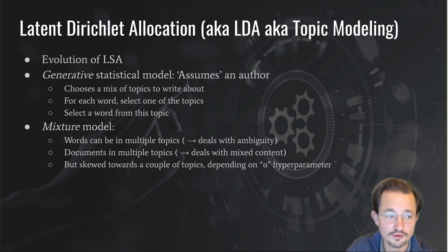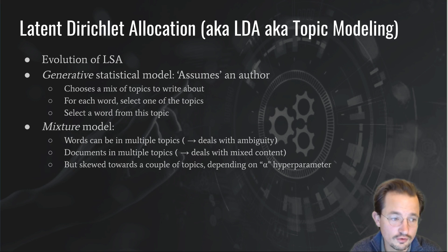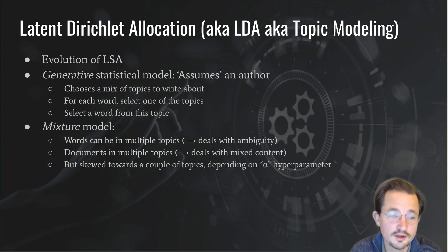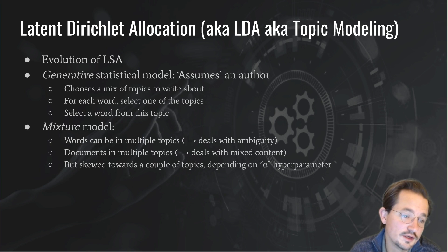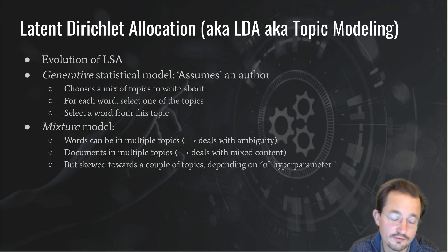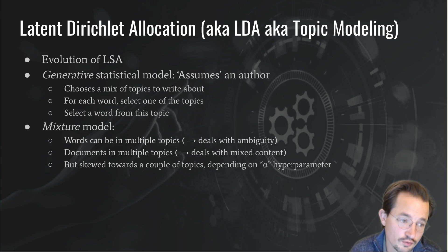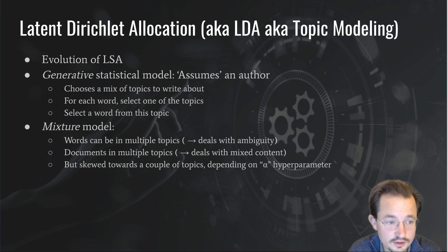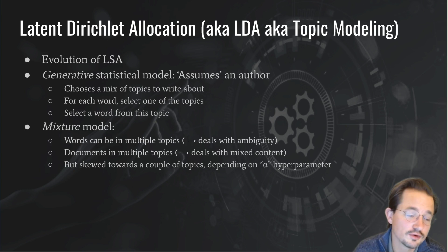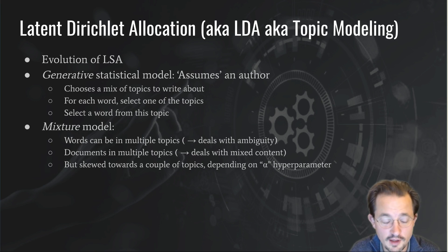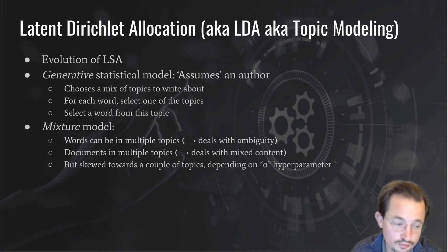The specific generative model underlying LDA assumes that if an author — say a journalist — wants to write a text, he will first choose a mix of topics to write about. So maybe he wants to write 50% about football and 30% about corruption. Then for each word, he selects one of the topics — so maybe the first word will be a football word and the second word might be a corruption word. Then for each word, the journalist selects a word from the topic. So maybe from football he will take 'championship,' and from corruption he will take 'bribery.' And then for the third word he might write 'FA,' and for the fourth word another football term, another corruption term, and so on.